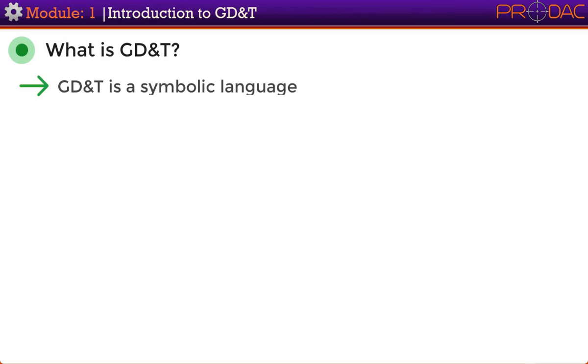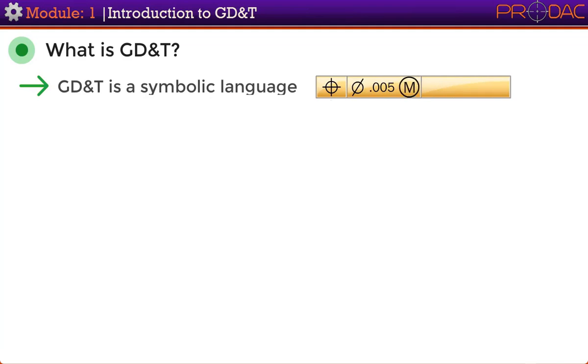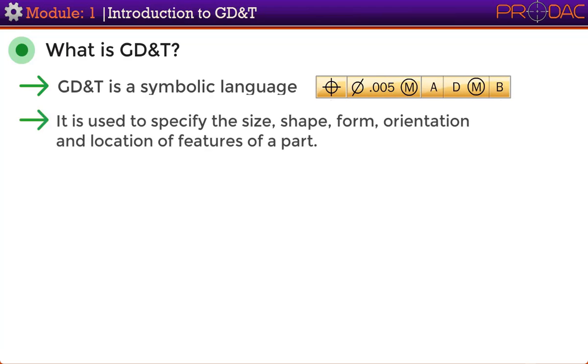Now let us understand what GD&T is. GD&T is a symbolic language — these are some of the GD&T symbols. It is used to specify the size, shape, form, orientation, and location of features of a part.